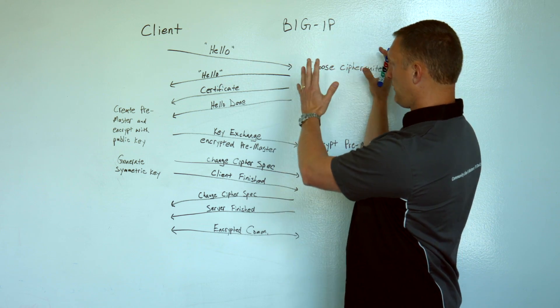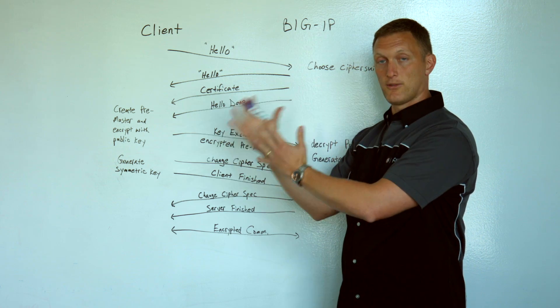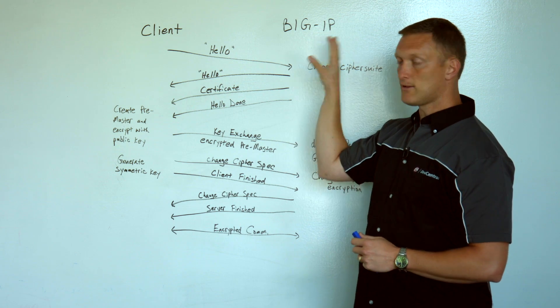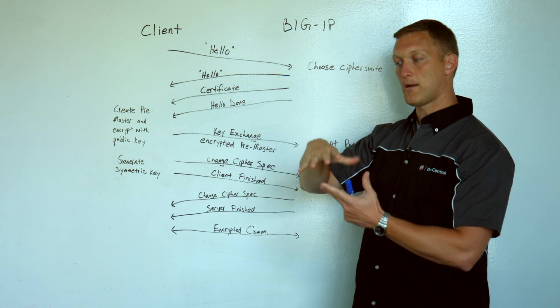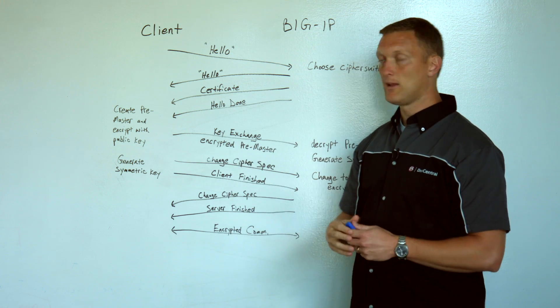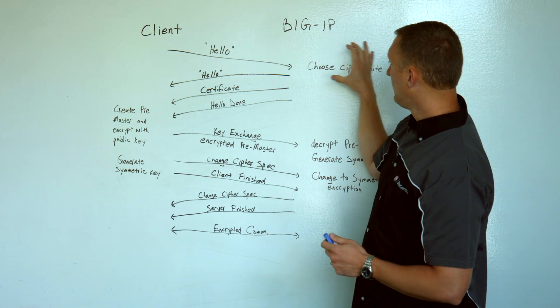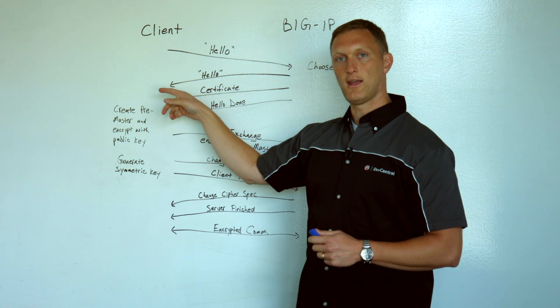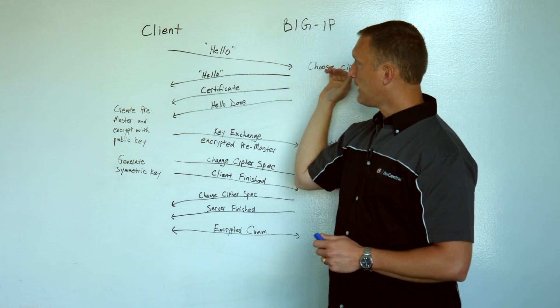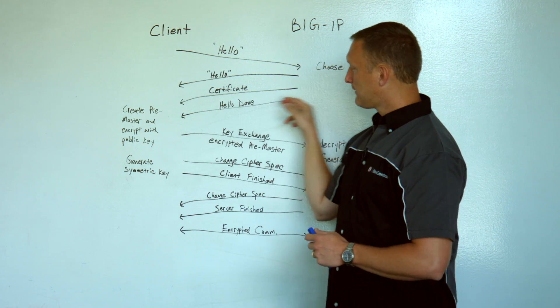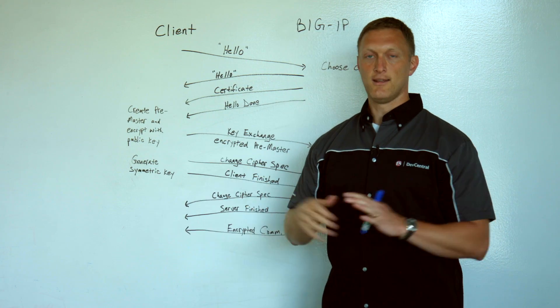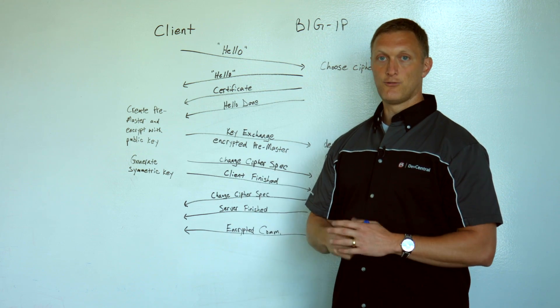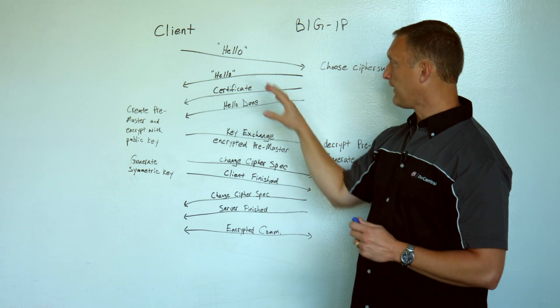Once you have those configured on your BIG-IP, the BIG-IP or the server is going to get to be the one that chooses the cipher suite. So again, it's important to configure those on the BIG-IP and to order those in the way that you want them to be ordered. The BIG-IP chooses the cipher suite that it's going to use, and then it sends back a server hello back to the client. And it also sends its certificate, and then it says the hello part is done. One key thing that's included in this certificate is the public key for the server.